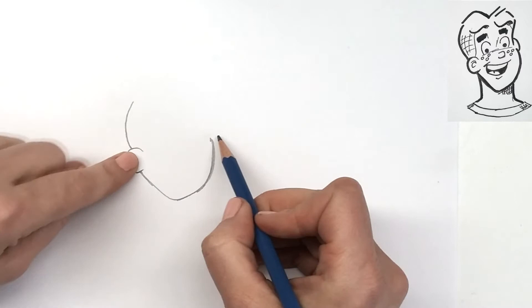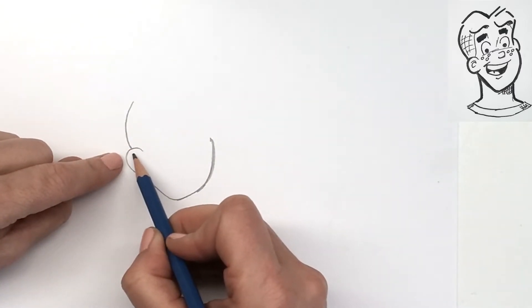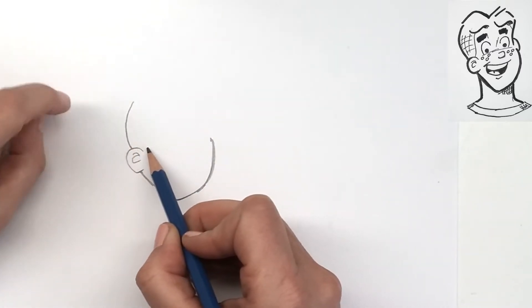His other ear is going to go right across there. Now we're going to draw a line, let's just draw the inside of his ear first. Now we're going to draw a line that goes from his ear to his other ear that just shows the top of his cheeks.